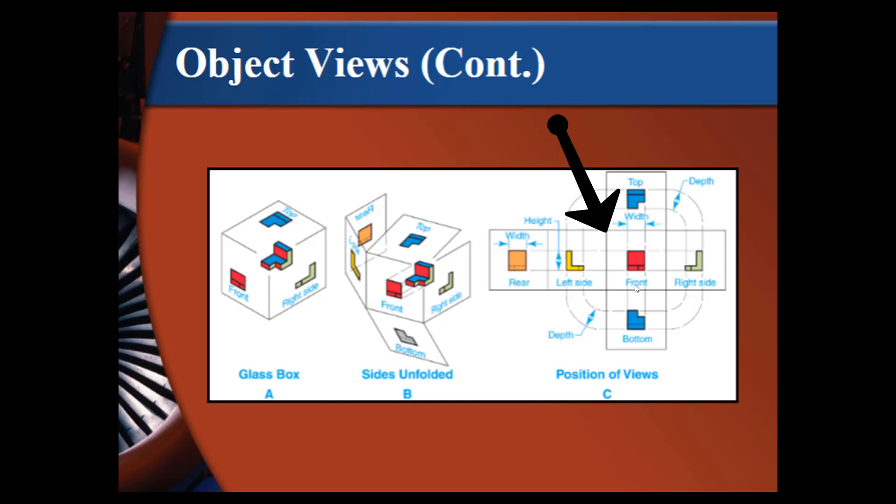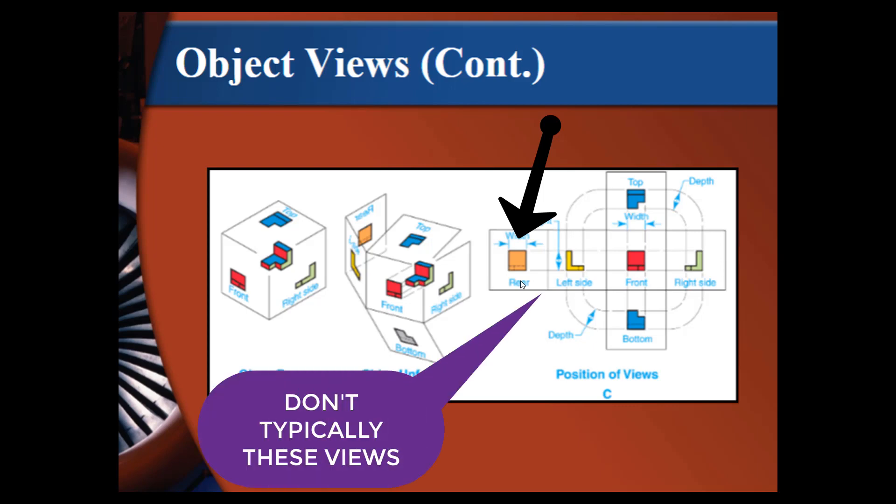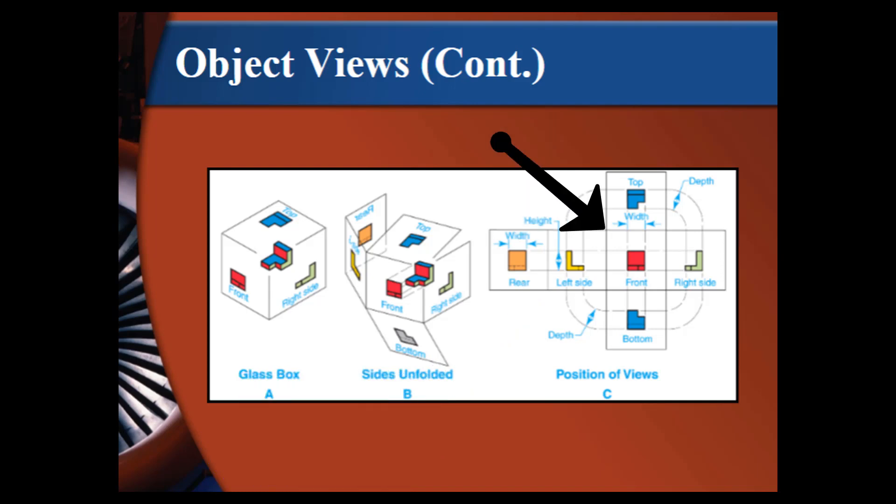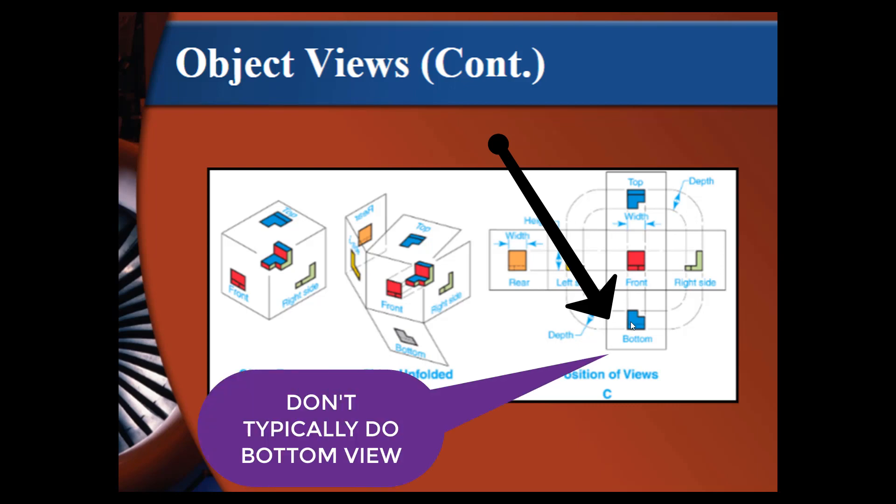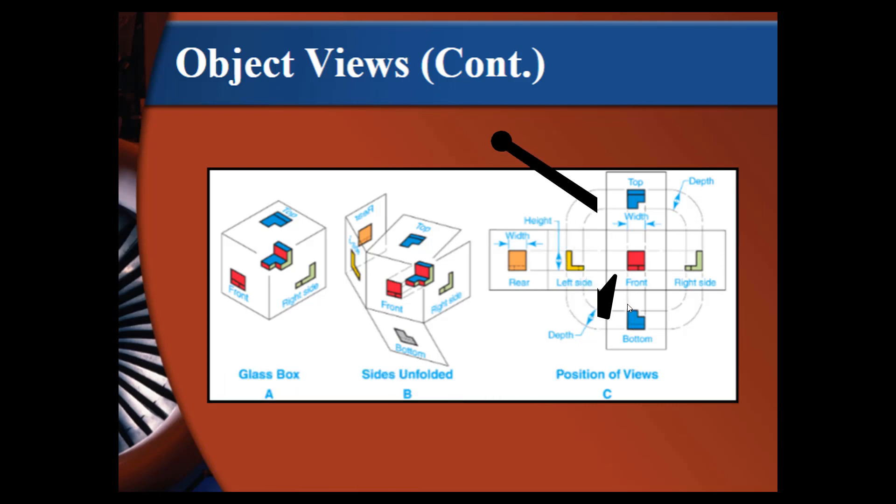Right in the middle, we have our front view. To the left of that, we have the left view. And to the left of that, we have the rear view. We typically don't need a left and a rear view. If we go back to the middle view and we go up, that is our top view. And if we go down, we have our bottom view. Typically, we don't need a bottom view. And then to the right is the right view. So you'll see the L shape on the right are the drawings that we typically use.